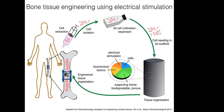This is a technique to treat large bone defects. It involves extraction of stem cells, followed by their isolation and 2D cultivation for cell expansion. Thereafter, the cells are seeded in a 3D scaffold, which mainly consists of a supporting frame, the stem cells, and some biochemical factors like growth factors, the medium, and external stimuli.